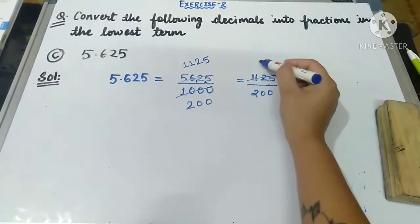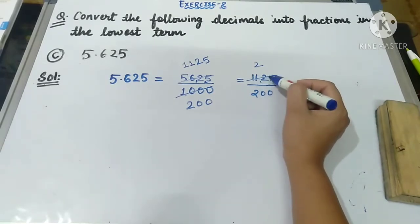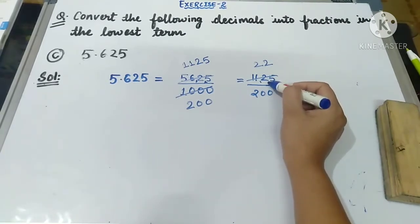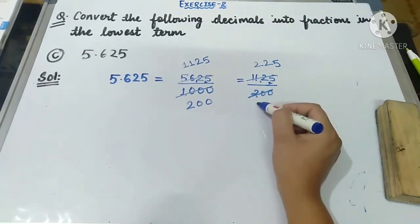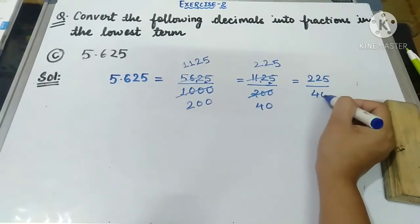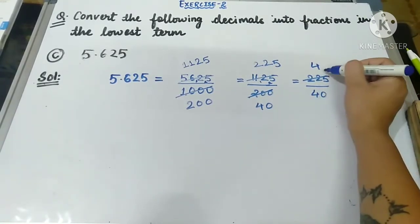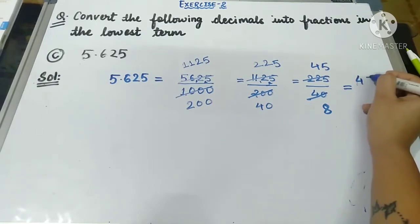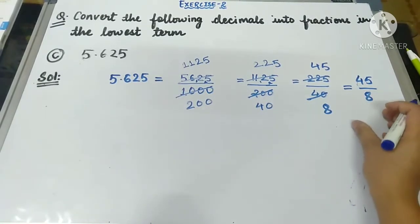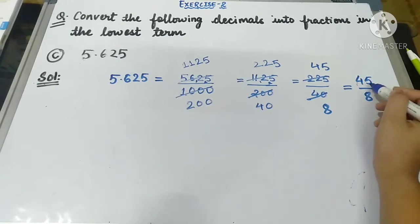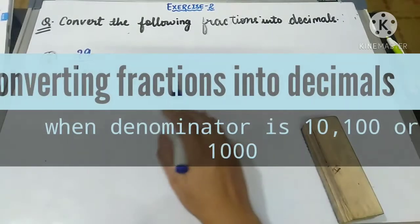125 upon 200 can again be divided by 5: 125 ÷ 5 = 25 and 200 ÷ 5 = 40, giving 25 upon 40. Dividing again by 5: 25 ÷ 5 = 5 and 40 ÷ 5 = 8, giving 5 upon 8. Now it is in the lowest term as there is no common factor other than 1 in both numbers. You can also write it as a mixed fraction if needed.